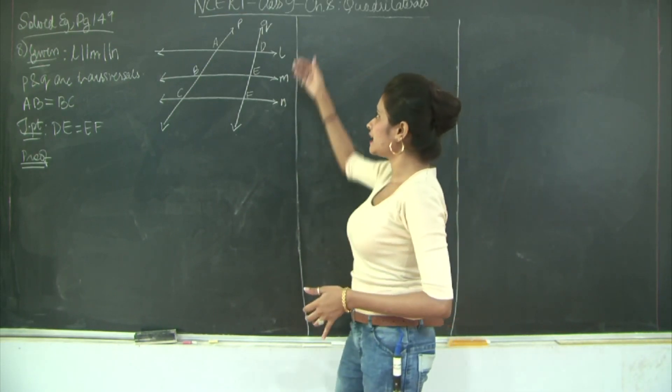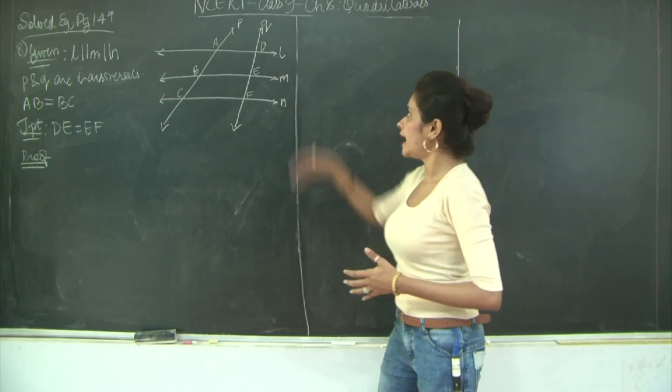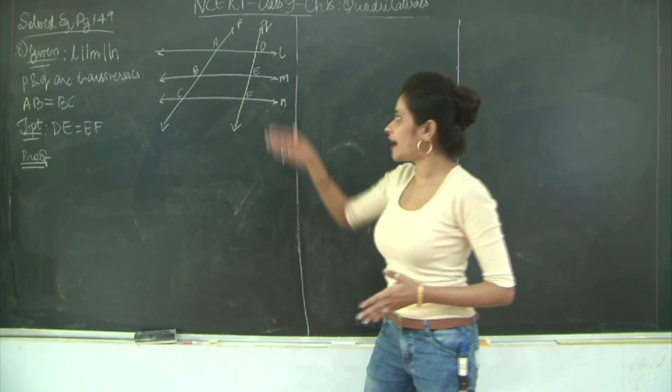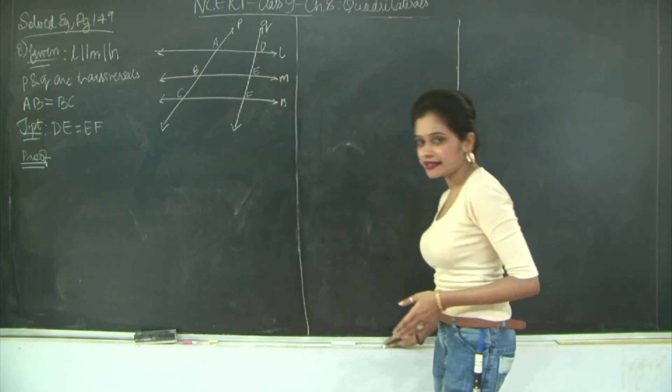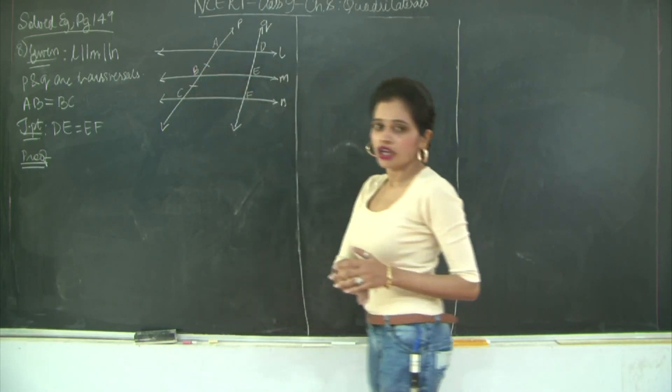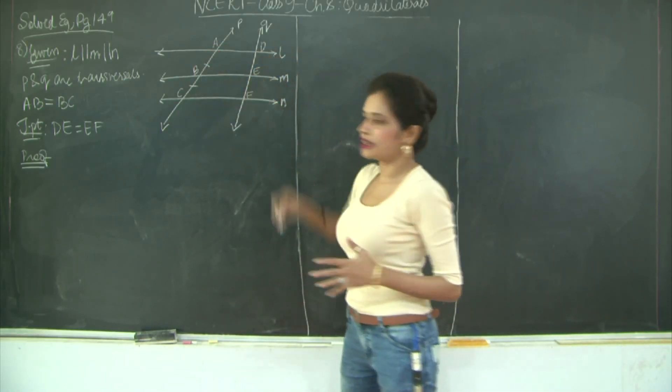It's been given that lines L, M and N are parallel to each other, and P and Q are the transversals on these lines such that AB is equal to BC. So let's mark AB is equal to BC. We need to prove that DE is equal to EF.